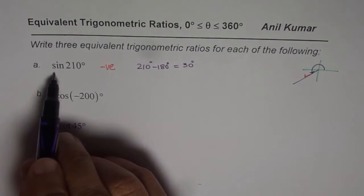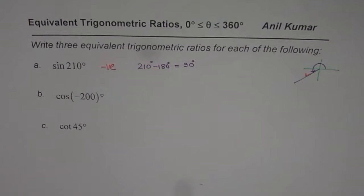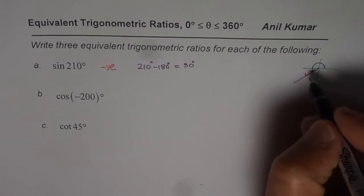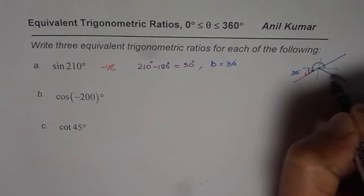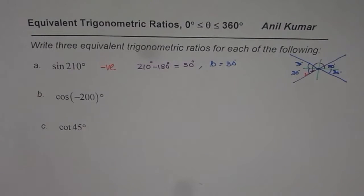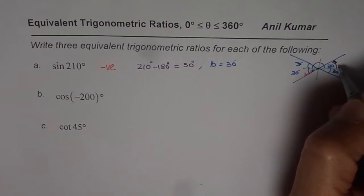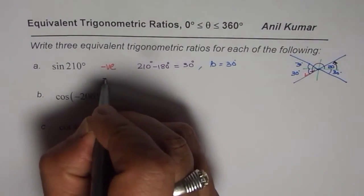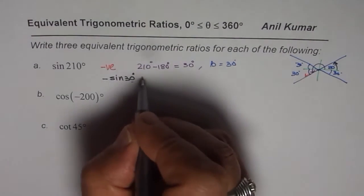Sine of 210 is equivalent to sines of angles which make a related acute angle of 30 degrees, but it could have a negative or positive sign depending on which quadrant we are in. We know the acute angle beta is 30 degrees, so in all four quadrants we look for beta of 30 degrees. We have three solutions. The first one is in quadrant 1 — sine is positive there, but we are looking for a negative value, so we write negative sine 30 degrees.